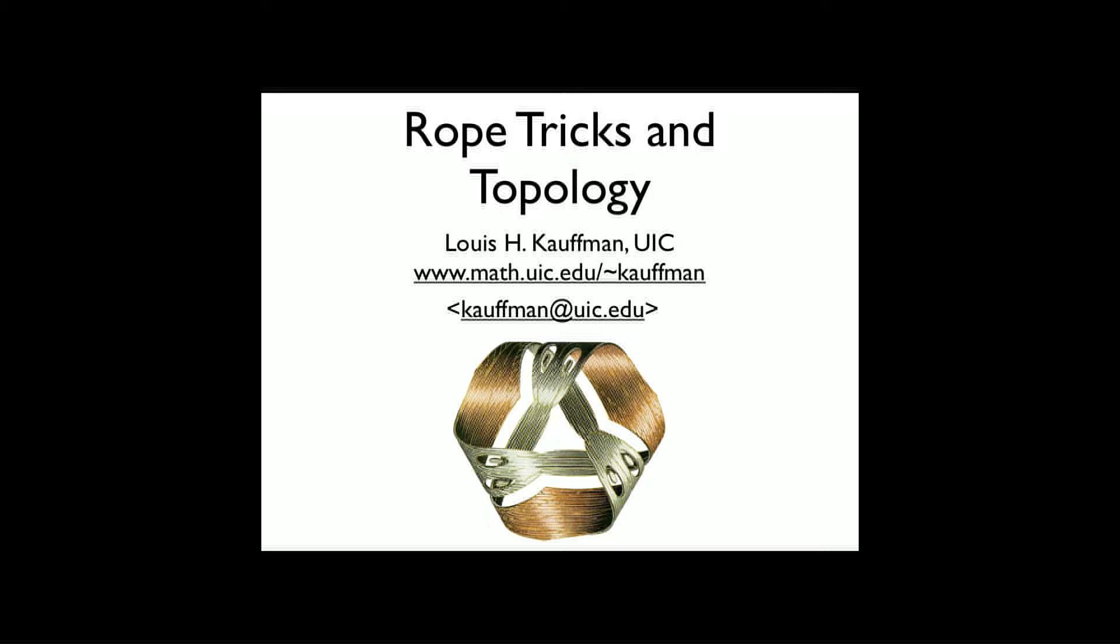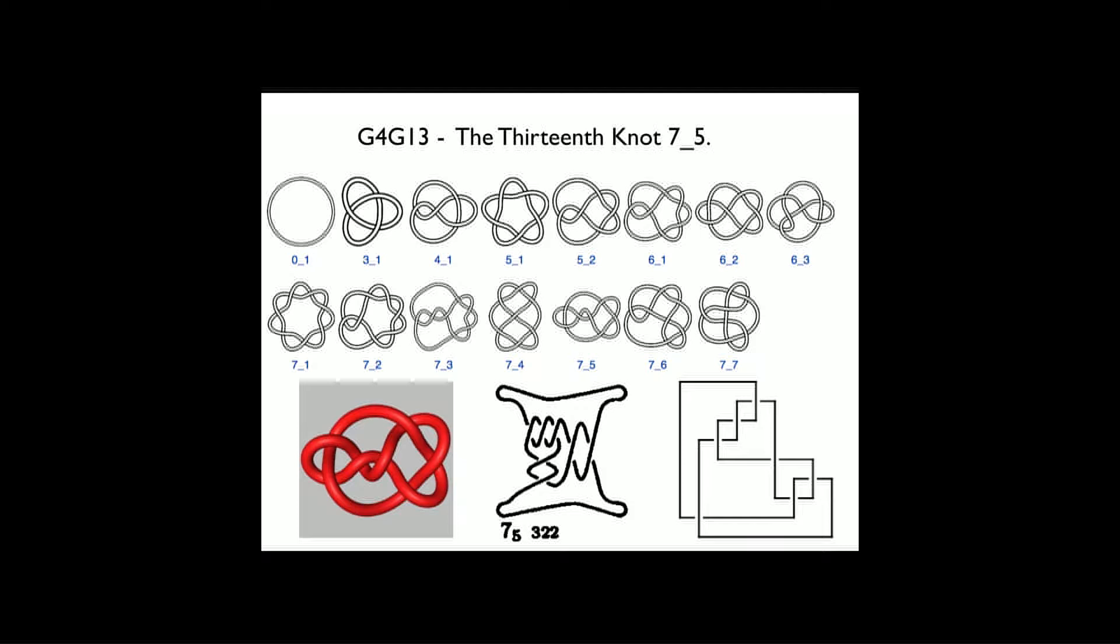Then there's the matter of G4G13. We should locate the 13th knot on the knot tables. Here are the knot tables up through the seven crossing knots. As you see, the fifth seven-crossing knot is the 13th knot in the table. I have indicated seven-five, that fifth knot, in three of its incarnations below.